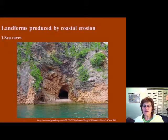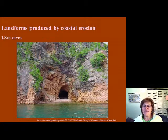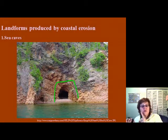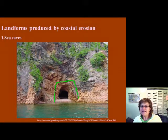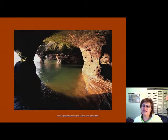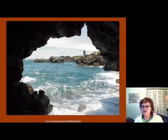The next thing we have to talk about is the landforms produced by coastal erosion. The first one is the sea cave. A sea cave forms through wave abrasion — as abrasion happens over time, it results in the formation of caves. This is very different from a normal limestone cave; this is along the shoreline and caused strictly by wave abrasion. There are amazing examples in Oregon and in the Mediterranean.